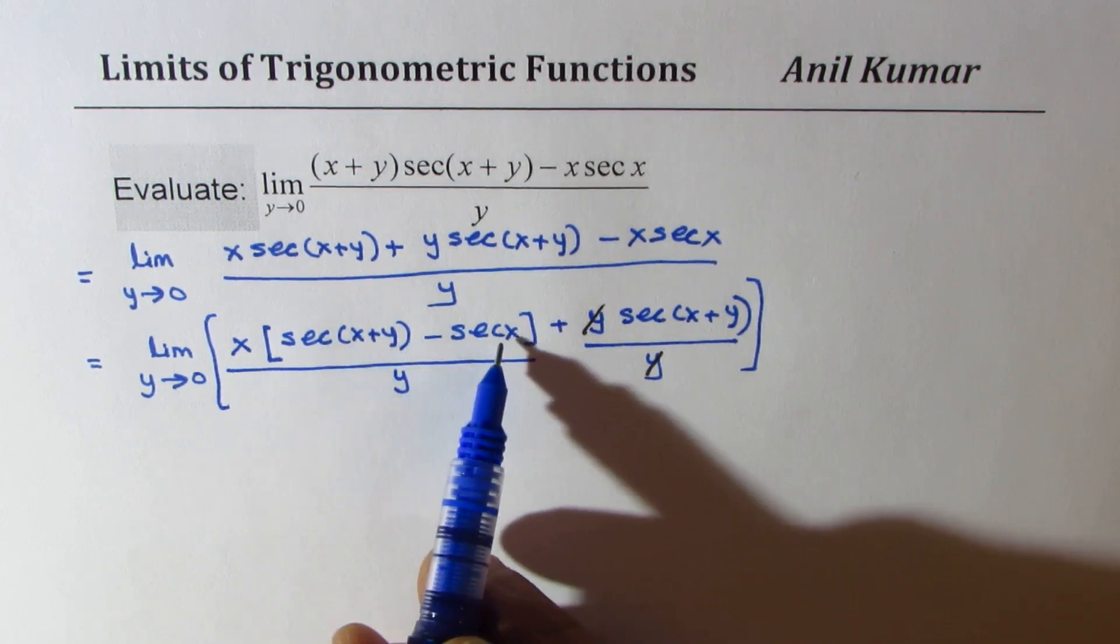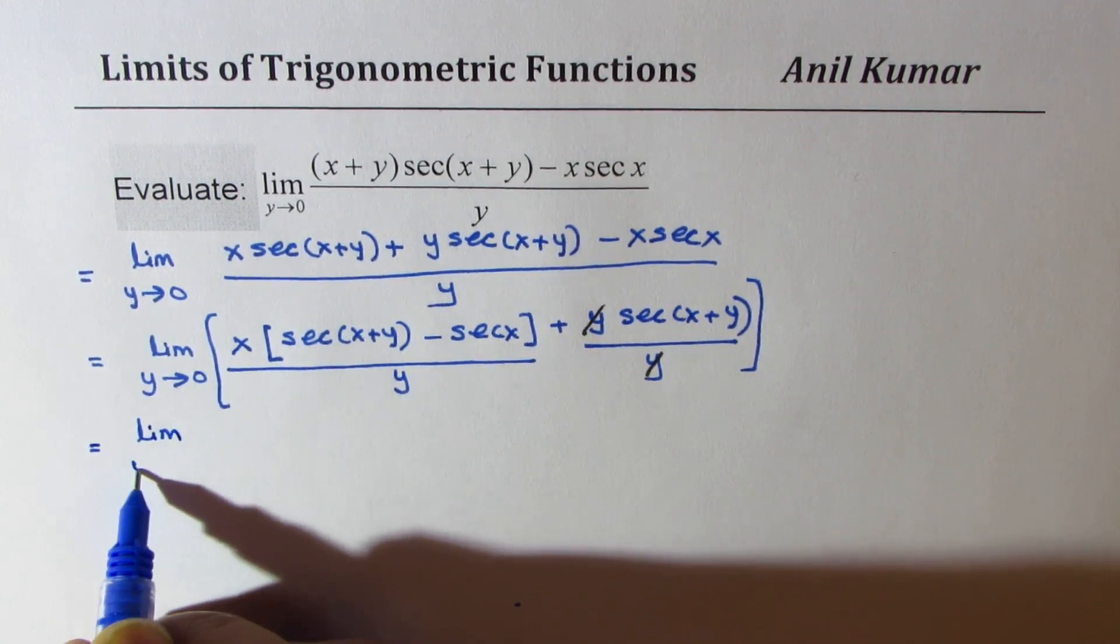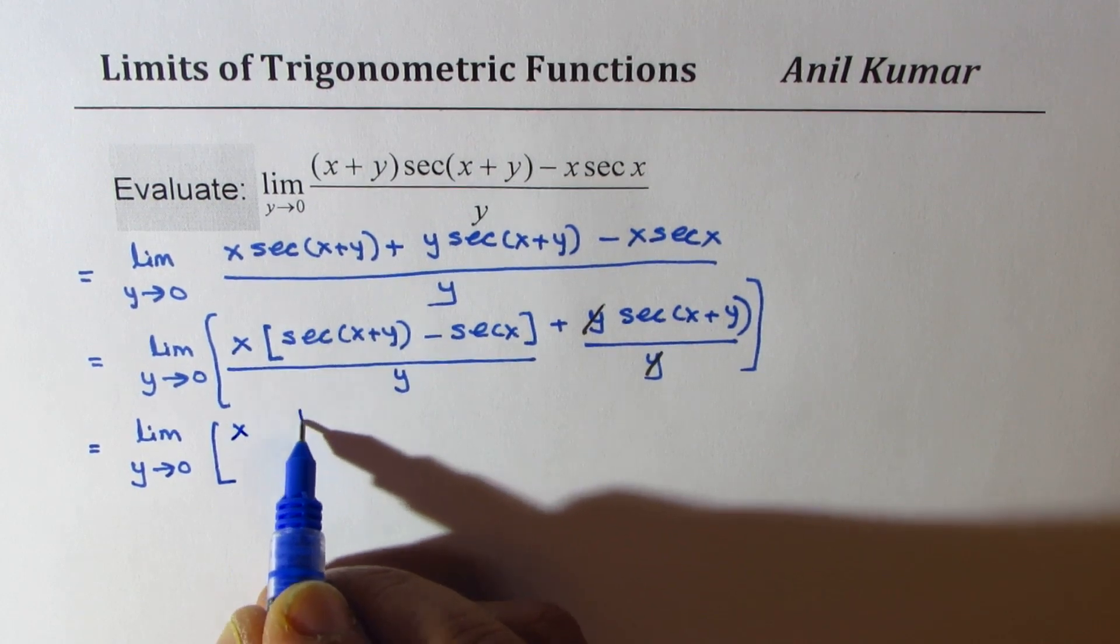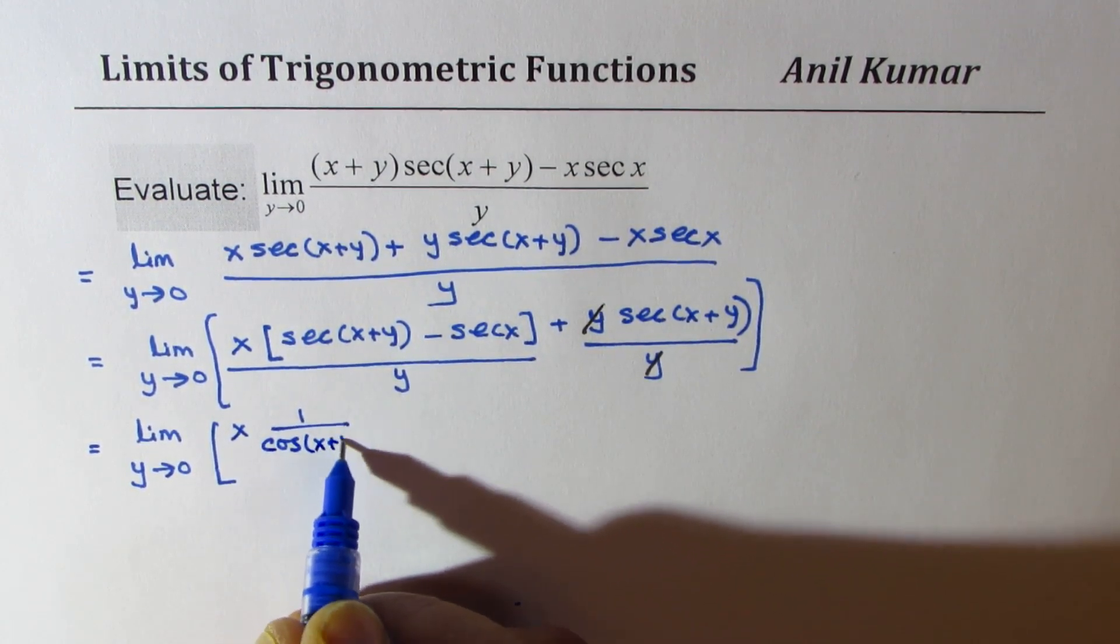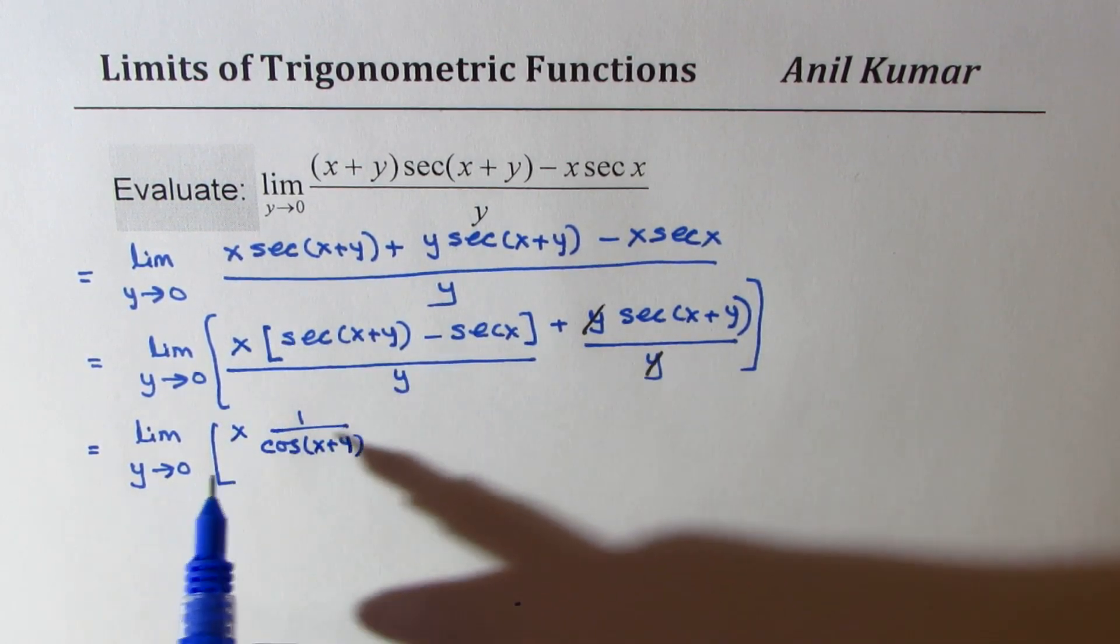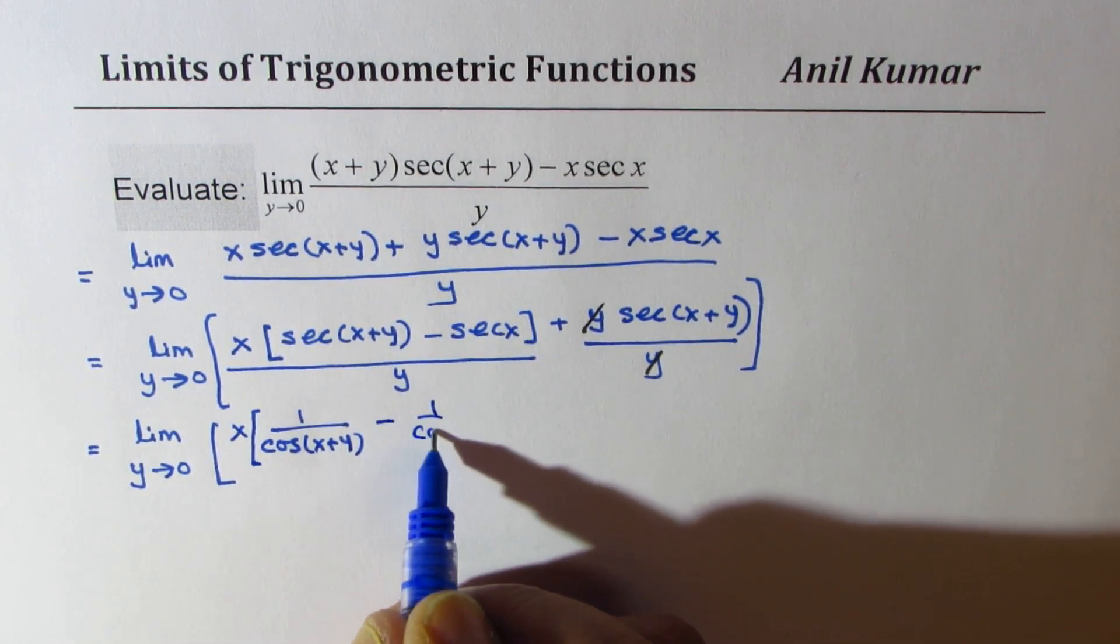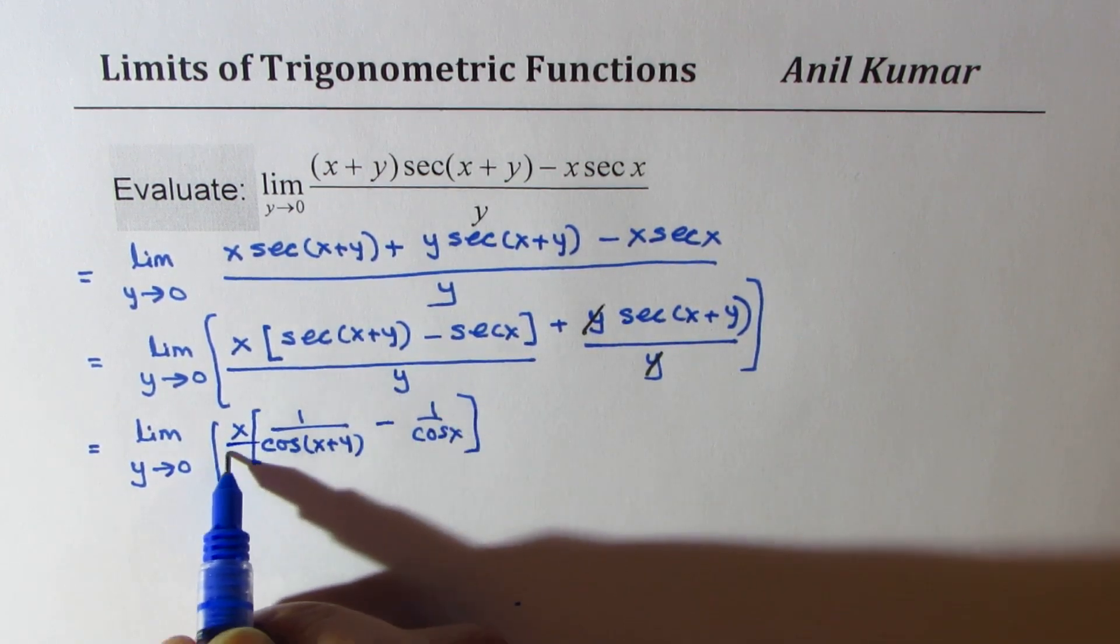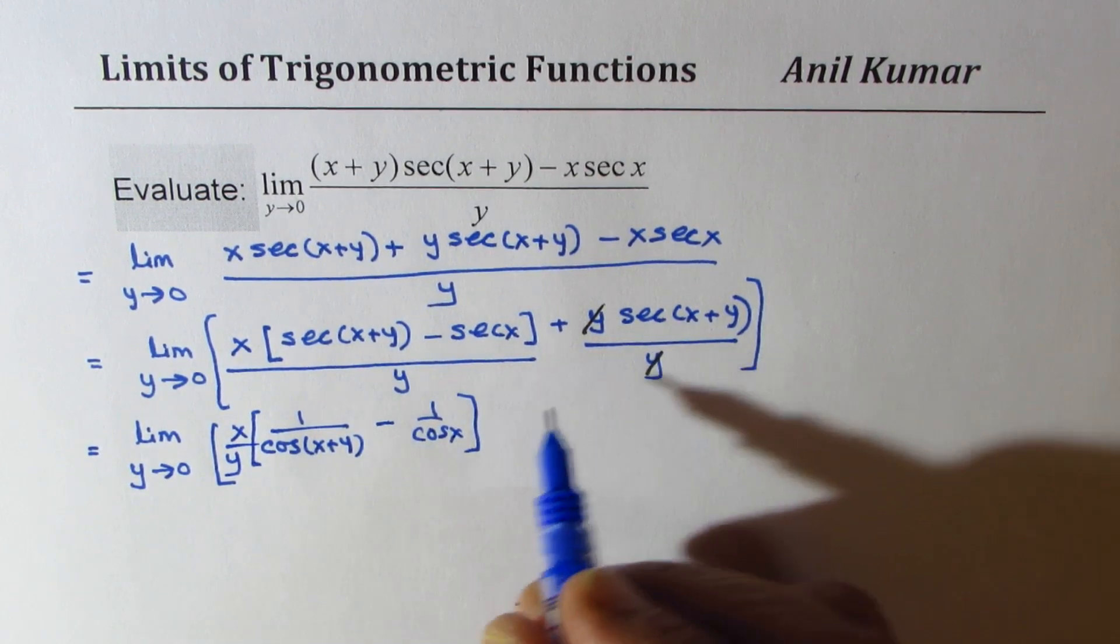Now in this case let's write secant as reciprocal of cosine, so we get limit y approaches 0, x times 1 over cos x plus y minus 1 over cos x. Let me write y also here, so x over y I'm writing for both of them.